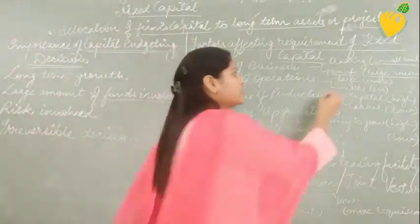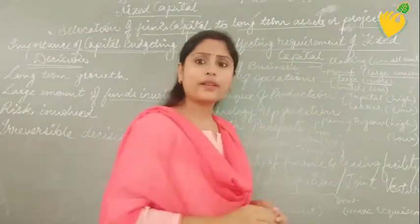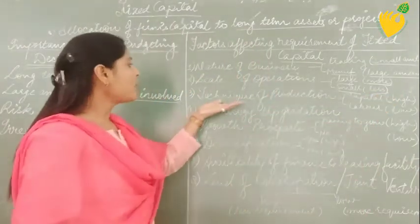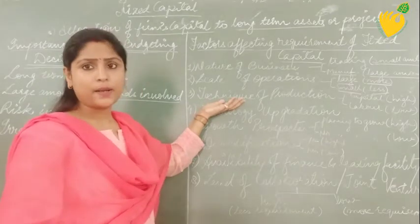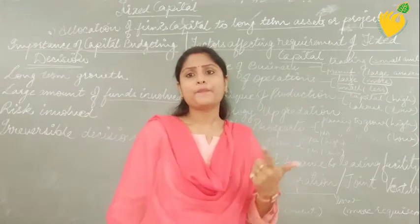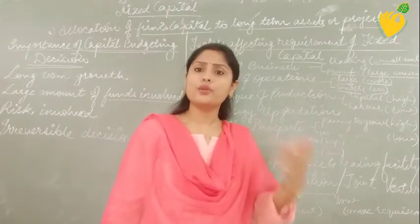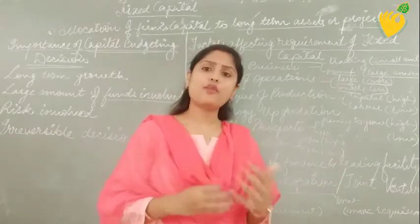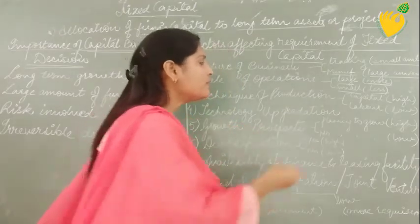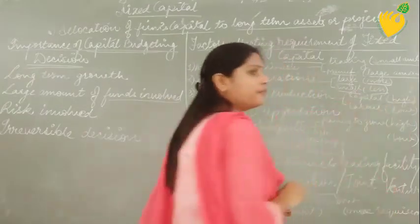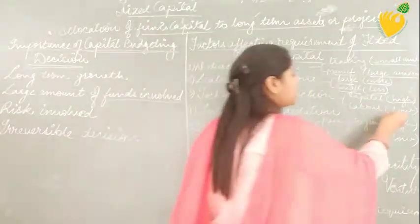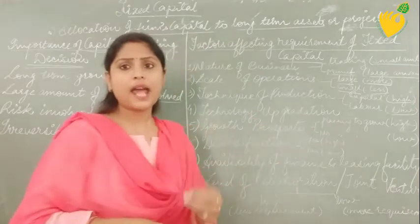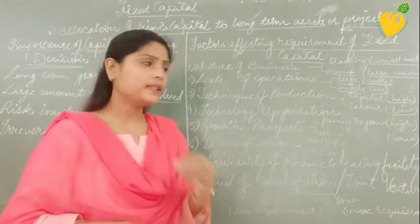Point number two is scale of operation. If the organization is large, it will require more fixed capital, and if it is working on a smaller level, it will require less fixed capital. Point number three is production technique. There are two types: labor-intensive, where more human resources are involved, and capital-intensive, where heavy machineries perform the production job. A capital-intensive technique requires higher fixed capital, as heavy machineries require a lot of maintenance compared to labor-intensive techniques.